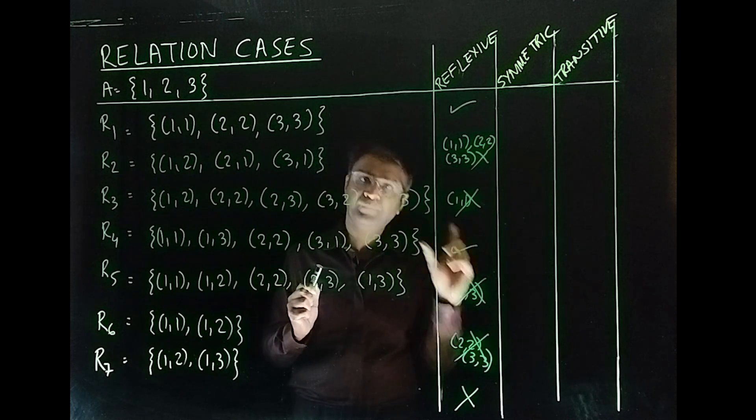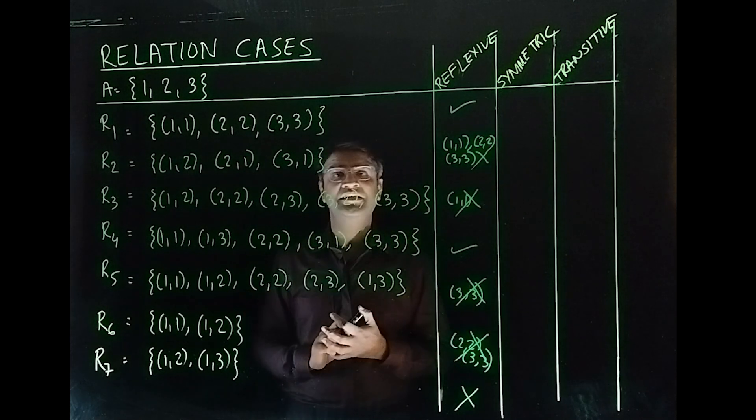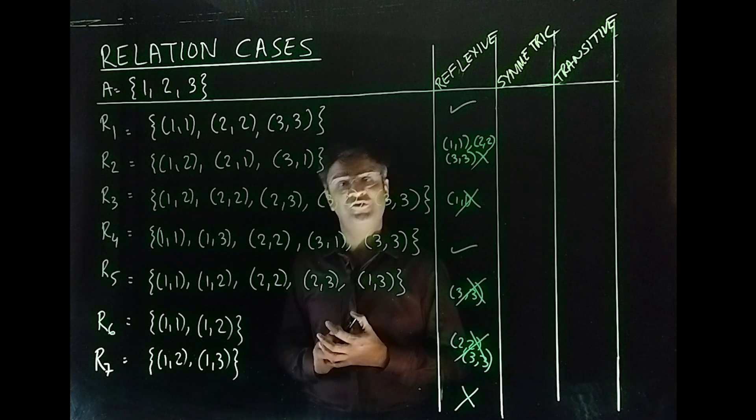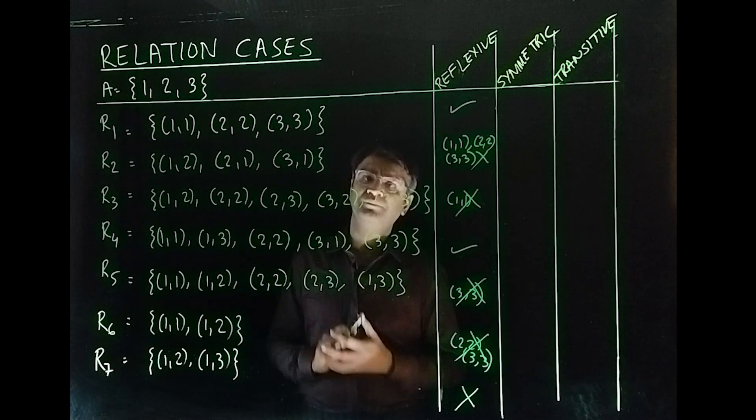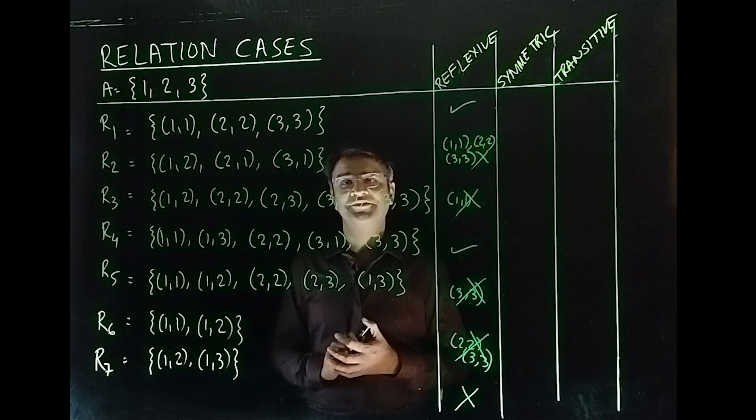which will be reflection of each other. (A,B), (B,A). Then and only then, you can claim symmetricity. If one of them is missing, it is not.